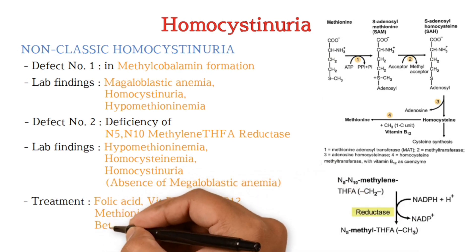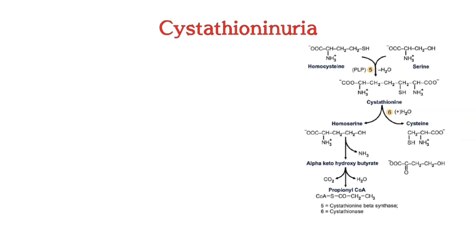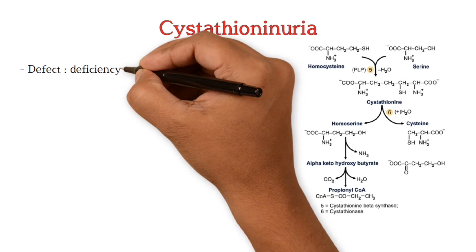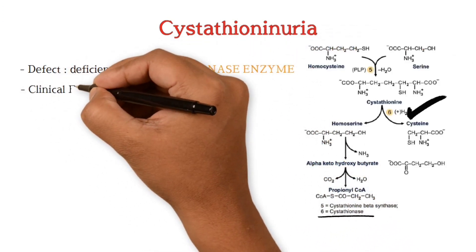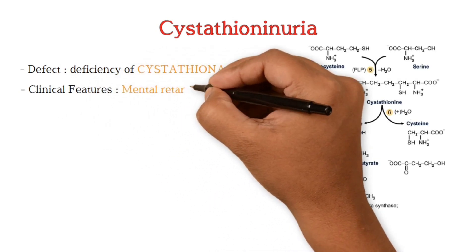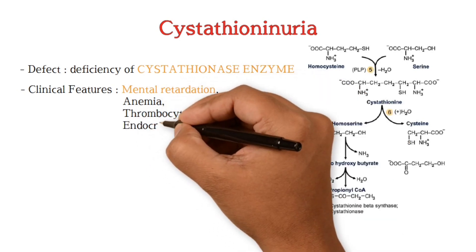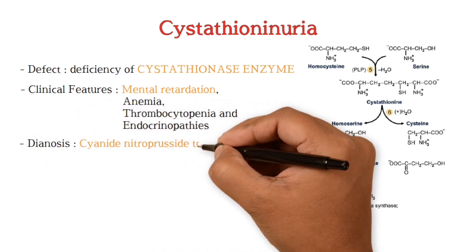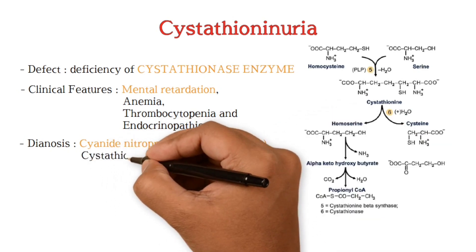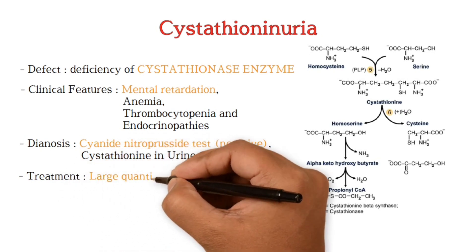Next is cystathioninuria. The basic defect is deficiency of the cystathionase enzyme. Clinical features include mental retardation, anemia, thrombocytopenia, and endocrinopathies. Importantly, the cyanide nitroprusside test is negative here, and cystathionine is present in urine. Treatment includes large amounts of pyridoxine.